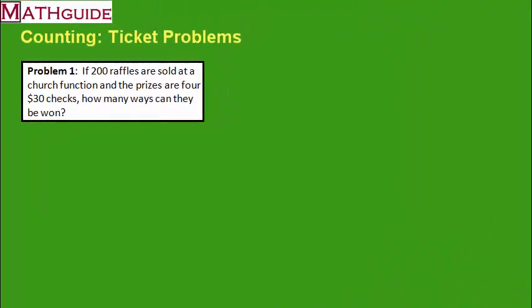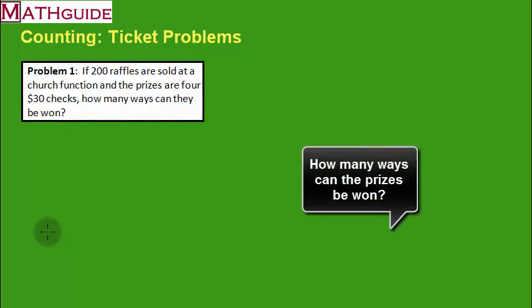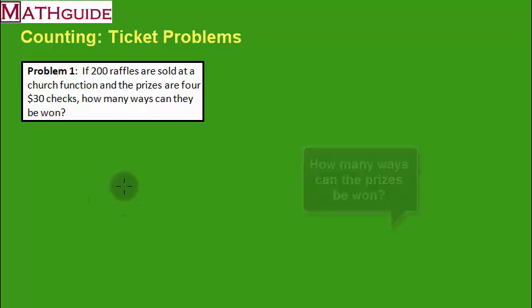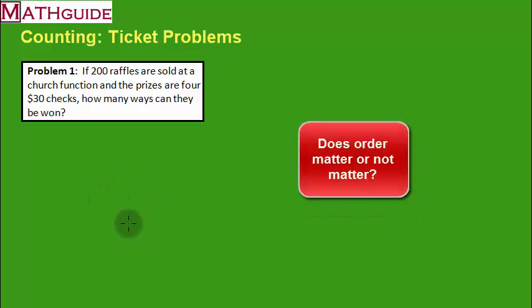Here's our first problem. We're going to talk about a raffle. Let's say that a certain church function offers a raffle and they have 200 raffles that they sell. If the prize is that they're going to raffle off four $30 checks, how many ways can the prizes be won? We're curious how many ways can those prizes be distributed to people.